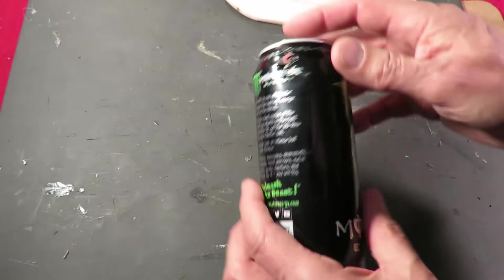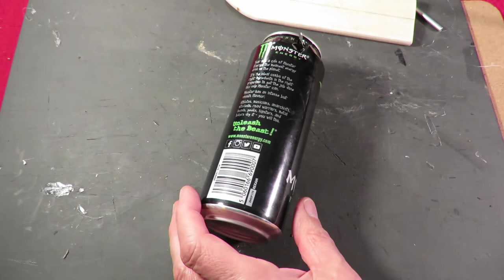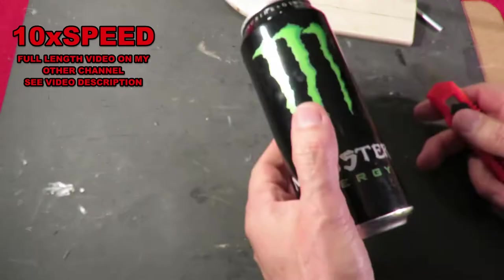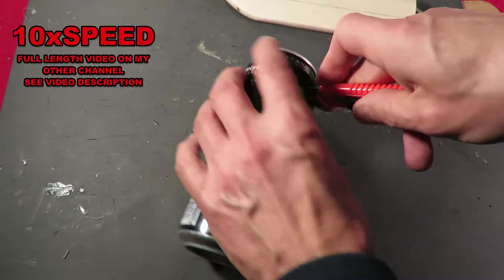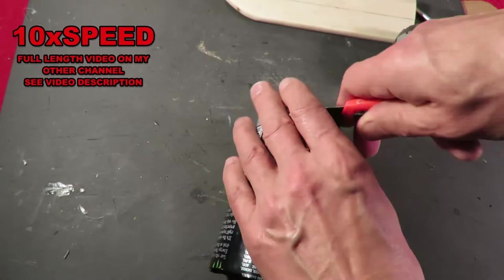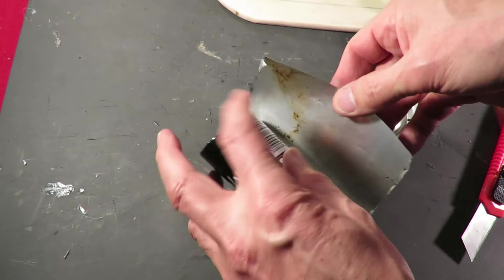Alright, so first thing to do, we need to cut this open. I've swilled it out, but we'll find out if there's any wildlife in there. Anything that's grown while it's been chucked in the hedge. Alright, I'll go and give that another wash.